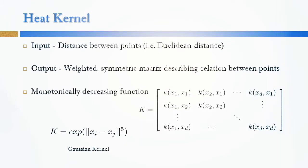Let's back up. In order to make the probability matrix we need a heat kernel. These are monotonically decreasing functions like Gaussian. Using the heat method allows us to maintain the relationship between points during dimensionality reduction.